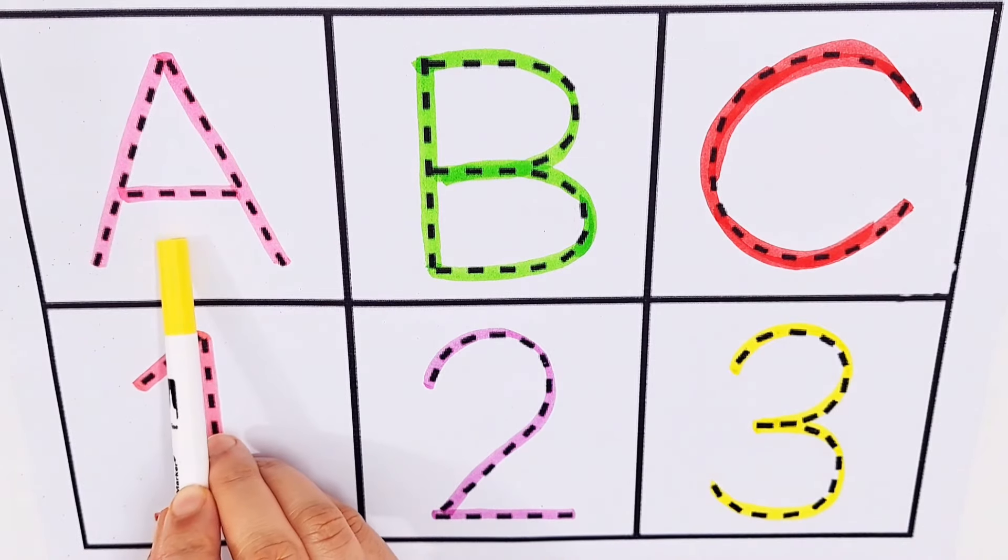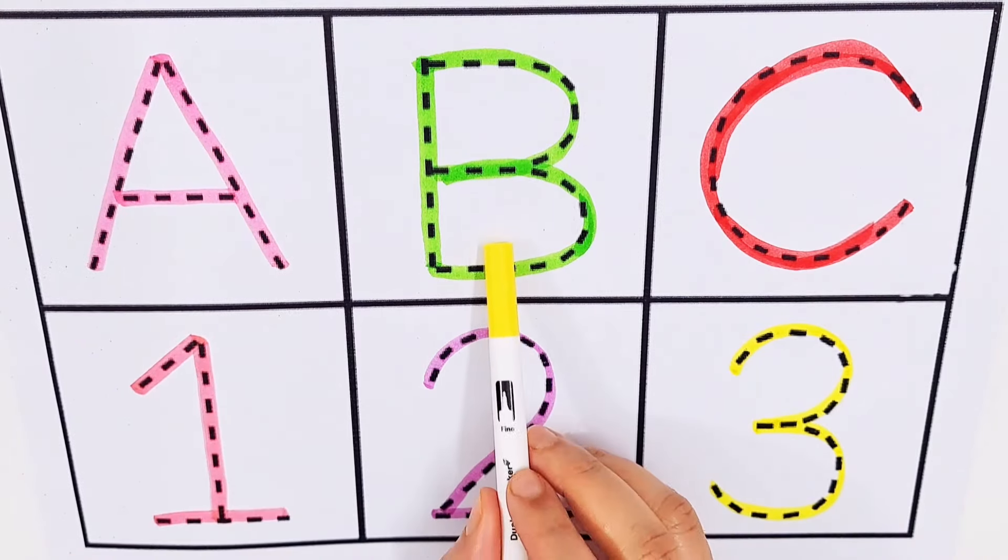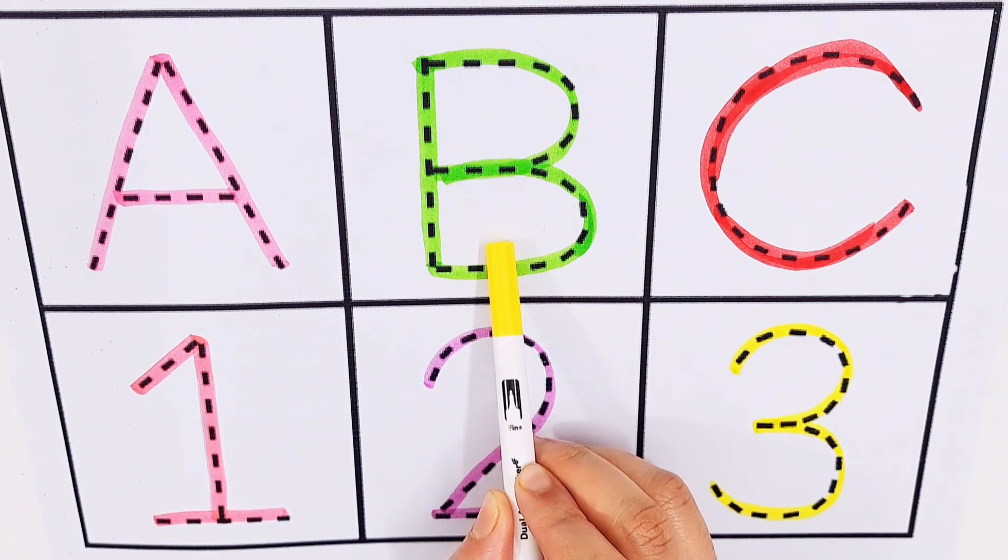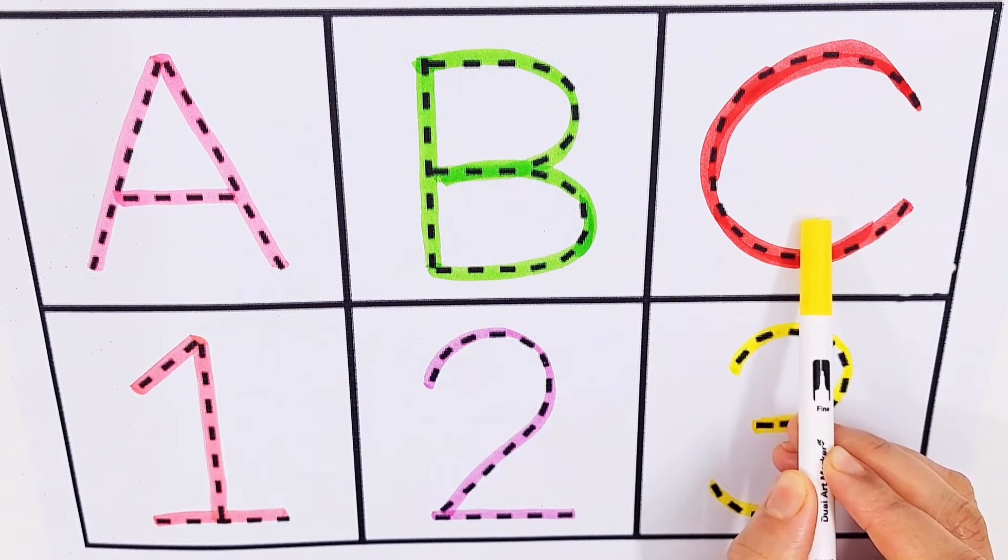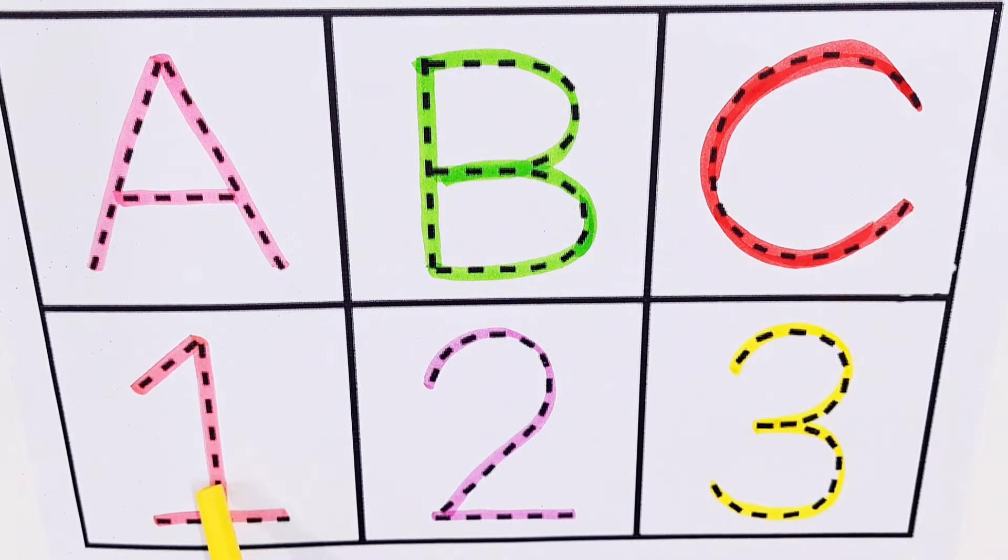A, A for avocado. B, B for birds. C, C for candy. Number 1, number 2, number 3.